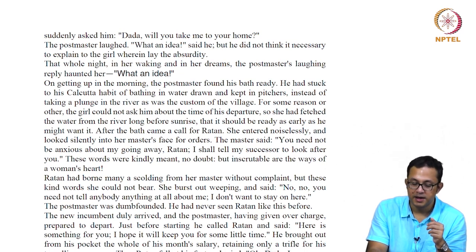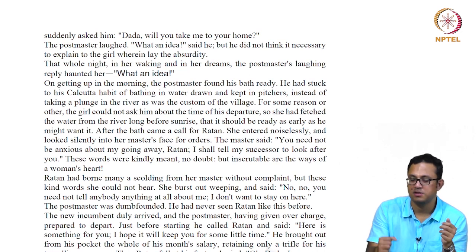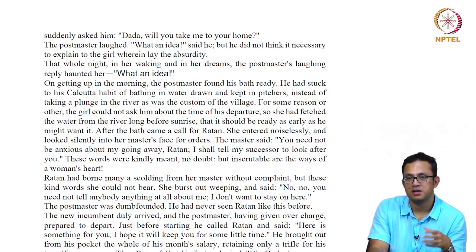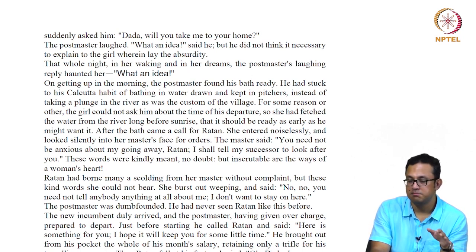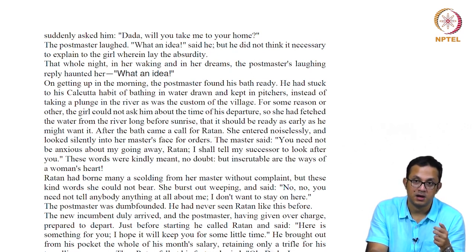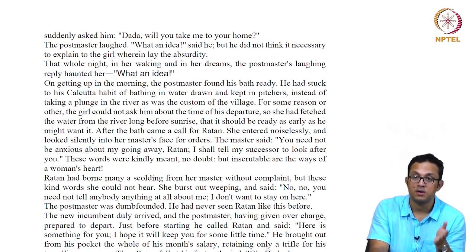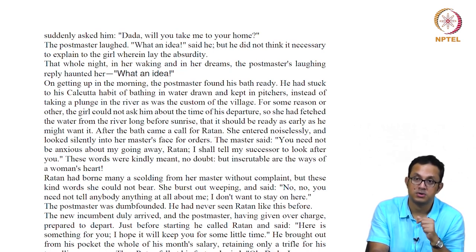The master said, 'You need not be anxious about my going away, Ratan. I shall tell my successor to look after you.' These words were kindly meant no doubt, but inscrutable are the ways of the woman's heart. We have this male versus female imagination at play — the girl's heart was very different from the man's heart. The man was thinking about making things right for the girl, whereas the girl had experienced a complete sense of rejection from the postmaster and retains that rejection. She refused to communicate beyond what was absolutely necessary, and that is the point in the story where communication takes a different turn — not one of empathy or existential fulfillment, but strictly one of servant and master. We stop here today and will conclude this story in the next lecture.